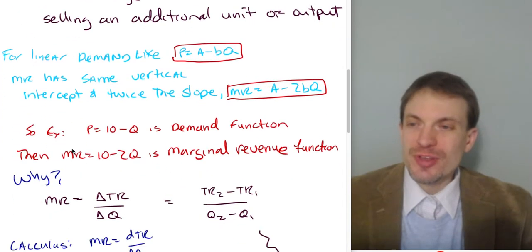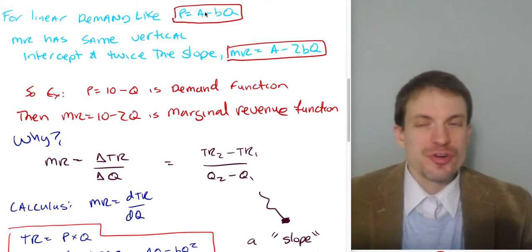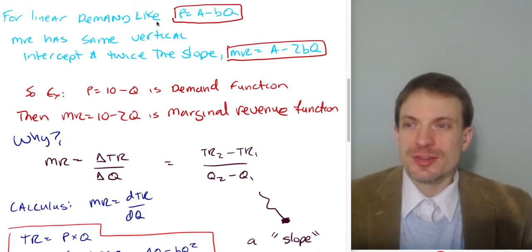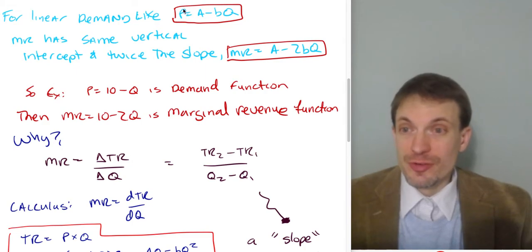And we can represent this for some linear demand curve. First, I'll show the generic. Then I'll show a simple numerical example. You can see it right here. So for a linear demand curve, such as price is equal to A minus BQ. Here, price, this is on the vertical. Q, this is on the horizontal.